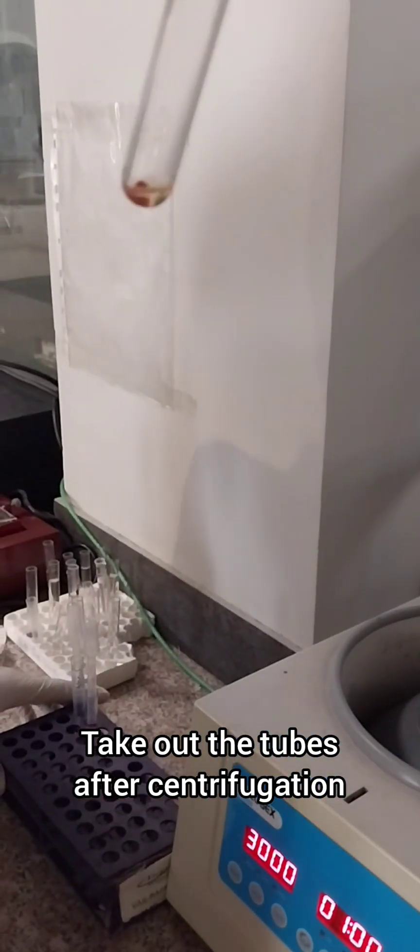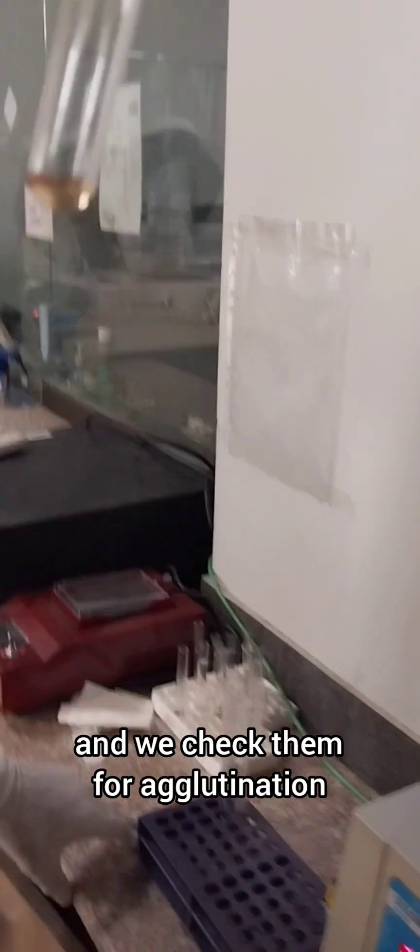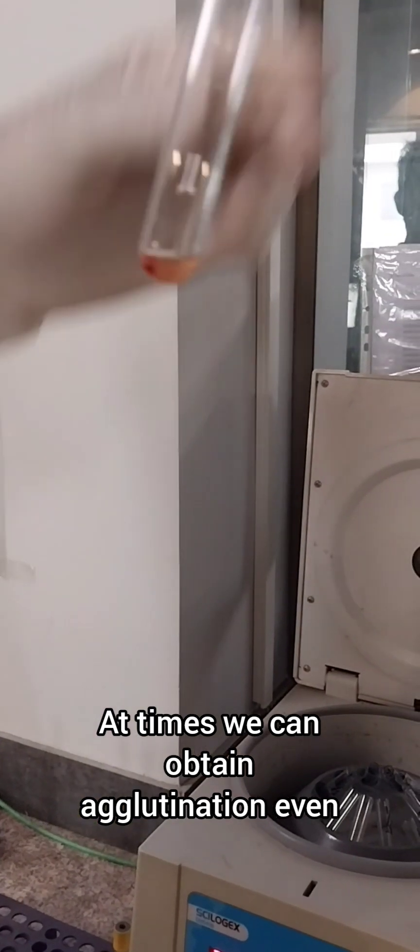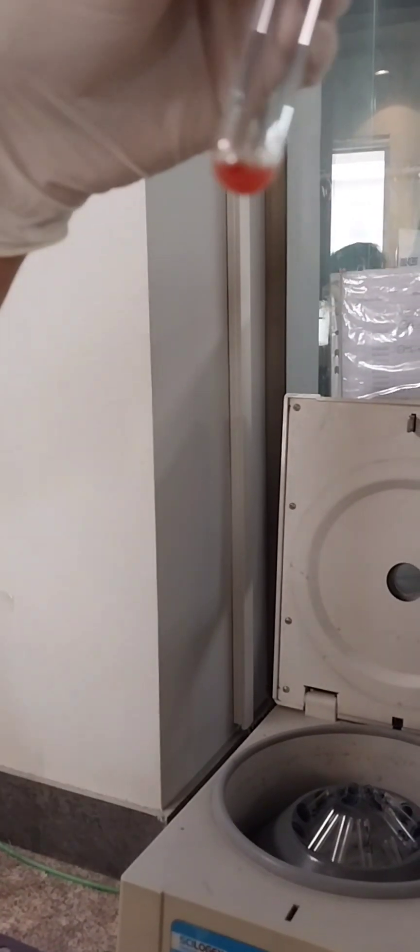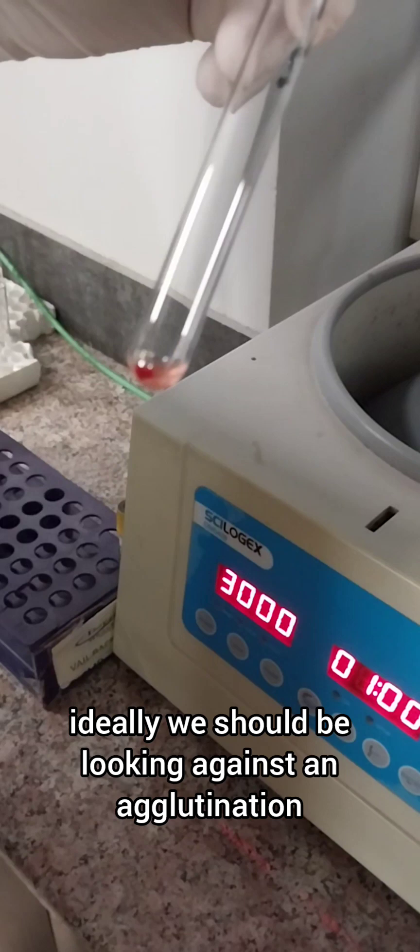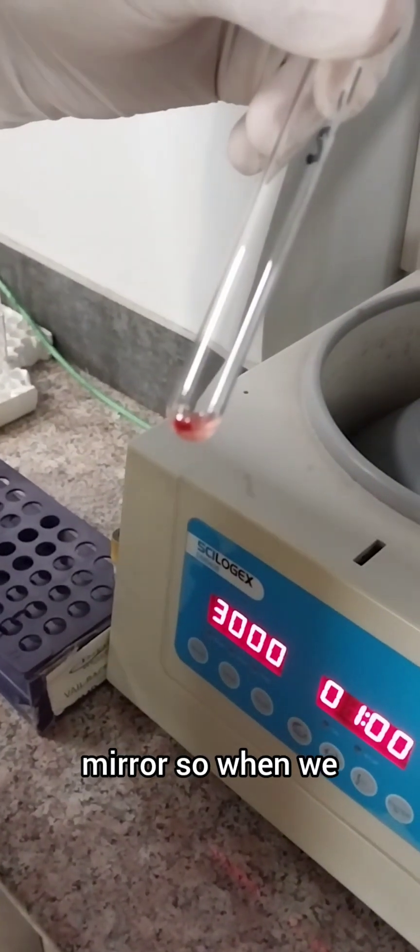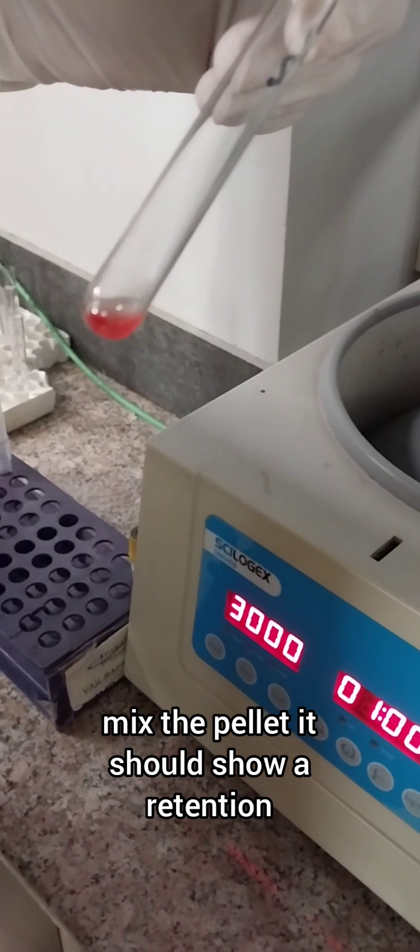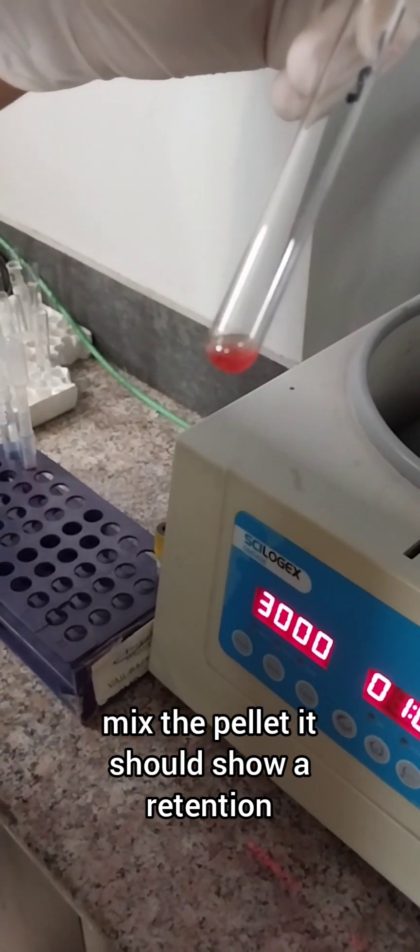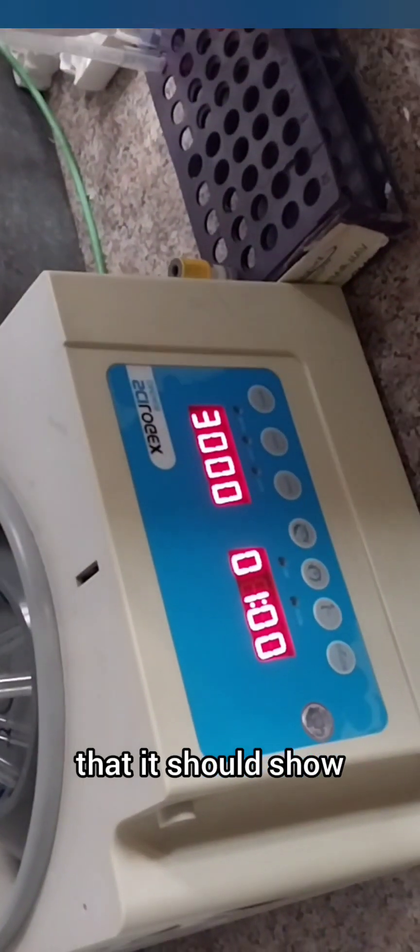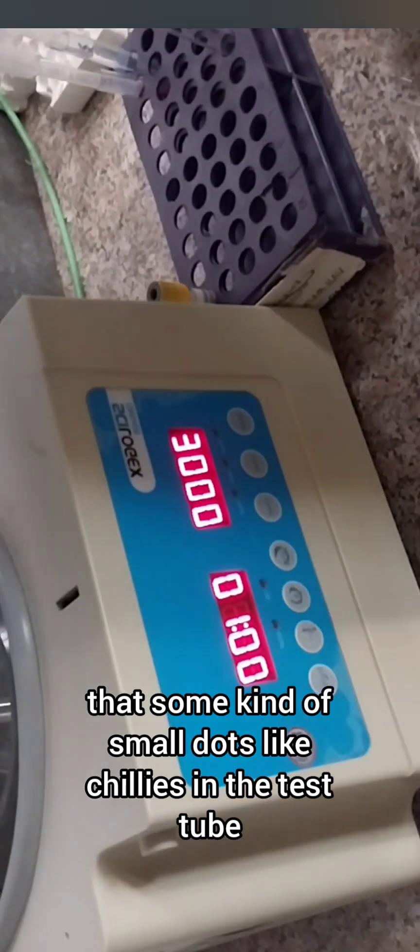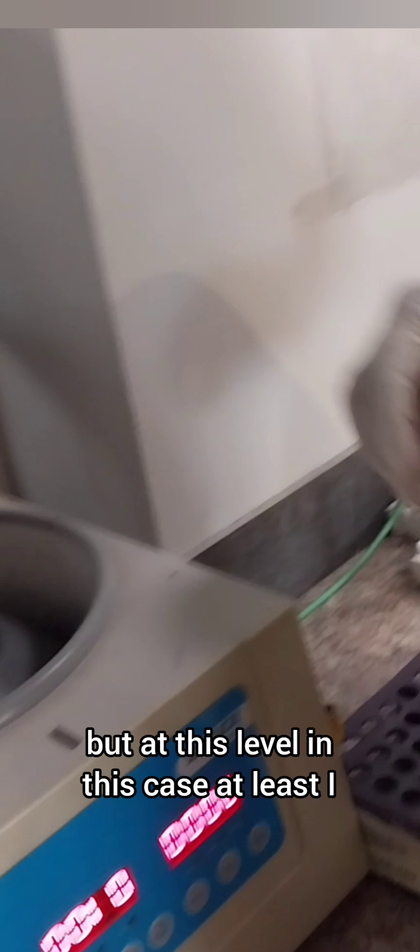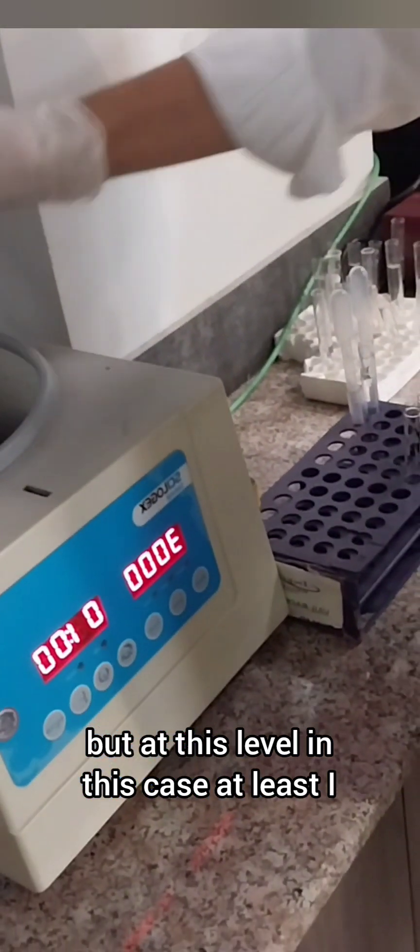Take out the tubes after centrifugation and we check them for agglutination. At times we can obtain agglutination even at this stage. Ideally we should be looking against an agglutination mirror. When we mix the pellet, it should show retention or some kind of small dots like chilies in the test tube.